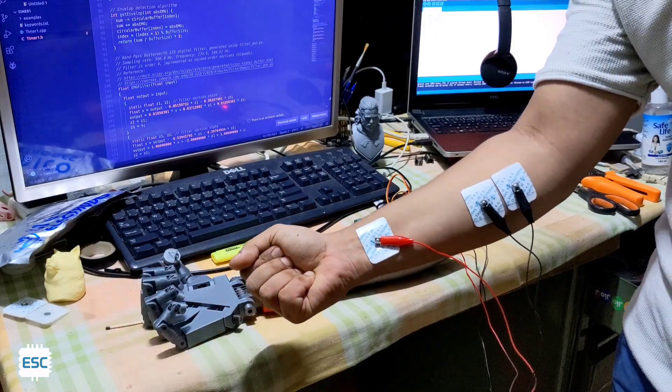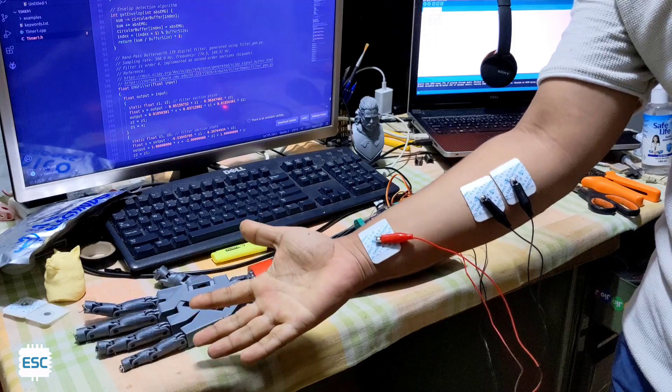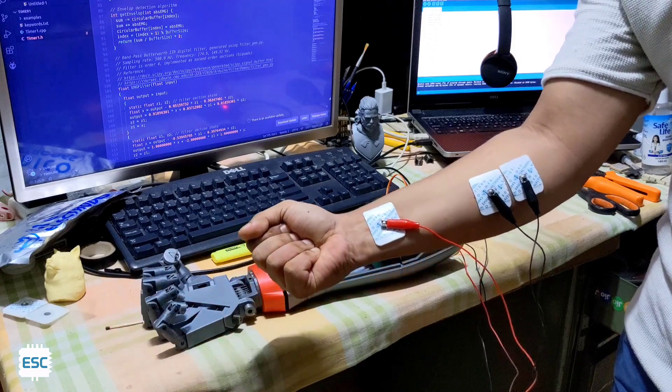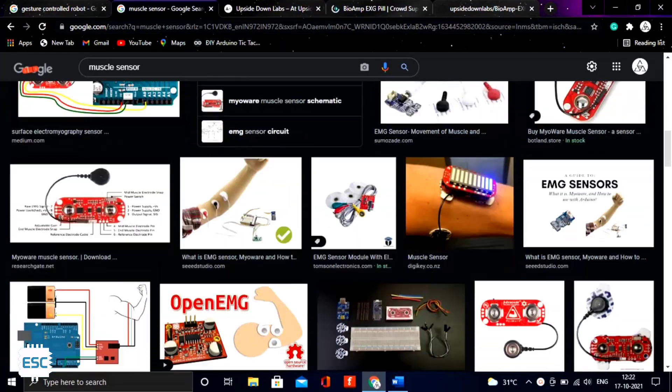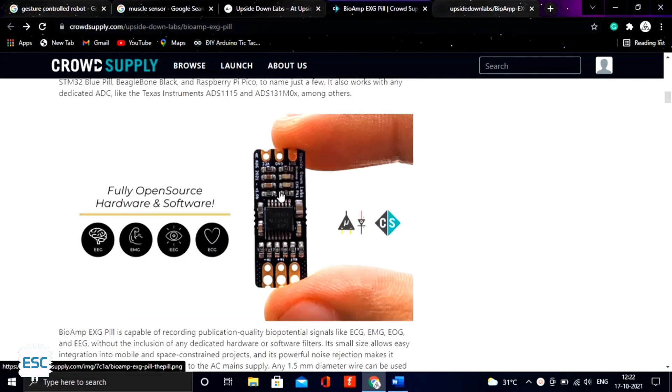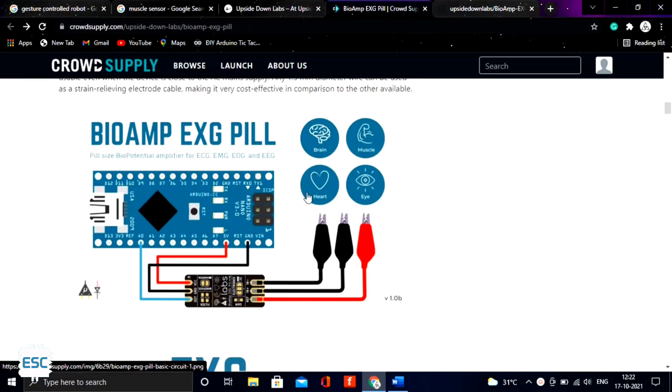Hello there. I am planning to make a gesture control robot, and for that I need some kind of muscle sensor. While searching for a muscle sensor, I found this BioAmp EXG Pill by Upside Down Labs.